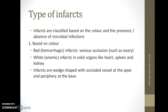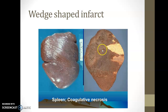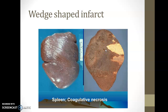Infarcts are wedge shaped with the occluded vessel at the apex and the periphery at the base. Especially in solid organs, these are wedge shaped infarcts. The reason is that these organs are supplied by end arteries. If there is an artery branching and there is infarct at that point, the base will be much wider — that's why it's called a wedge shaped infarct. This is a commonly asked question in viva exams and practicals.